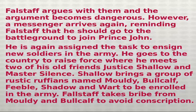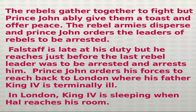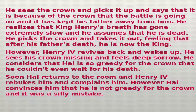Justice Shallow brings a group of rustic men named Moldy, Bullcalf, Feeble, Shadow, and Wart to be enrolled in the army. Falstaff takes bribes from Moldy and Bullcalf to avoid conscription. The rebels gather to fight, but Prince John cleverly offers them a toast and proposes peace. The rebel armies disperse, and Prince John orders their leaders arrested. Falstaff arrives late but manages to arrest the last rebel leader just in time. Prince John then orders his forces to return to London, where King Henry IV is terminally ill. In London, King Henry IV is sleeping when Hal reaches his room and sees the crown.